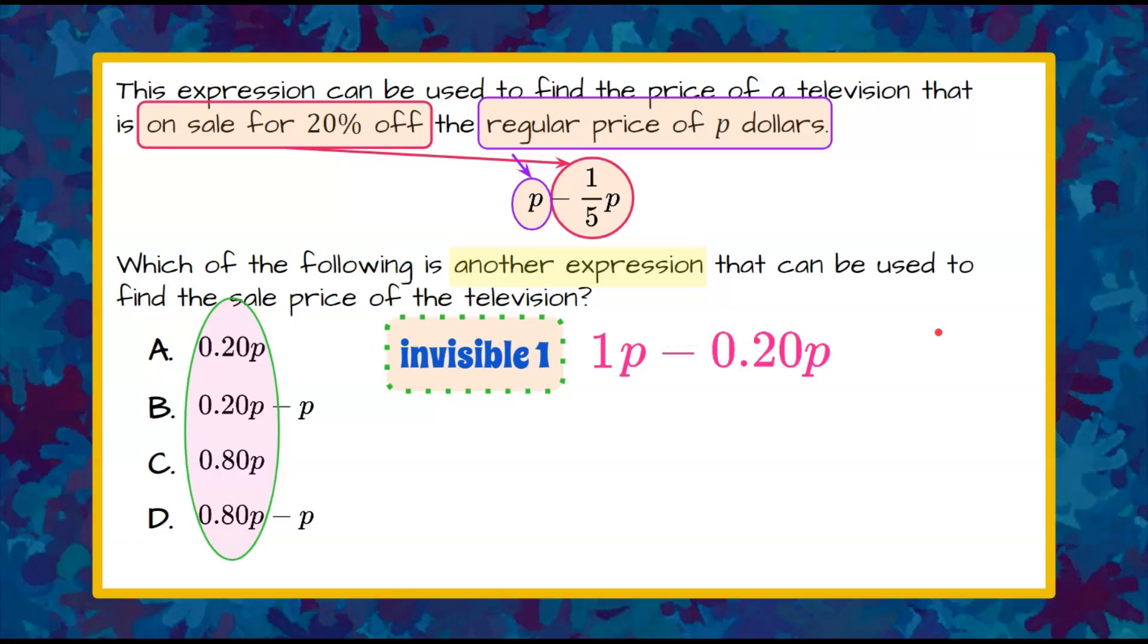It's understood. These are now what we call like terms. They have the same variable with the same exponent. Meaning we can combine them. We can add or subtract their coefficients.